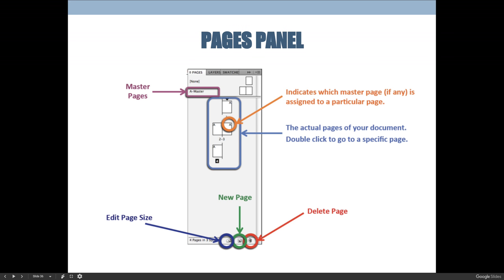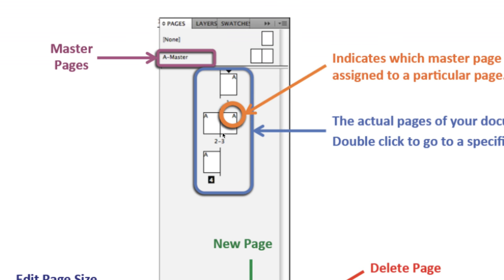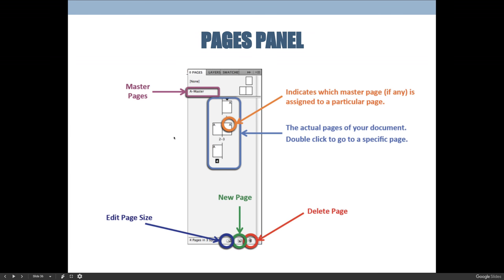You can see that the one master page you have right now is highlighted. If you look at the actual pages listed, there's a capital letter A on each one — that's saying those pages are linked to a master page. Every page you create in your document is linked to a master page; in this case it's the capital letter A master page. You can change it, make more — a B master, C master, or D master.